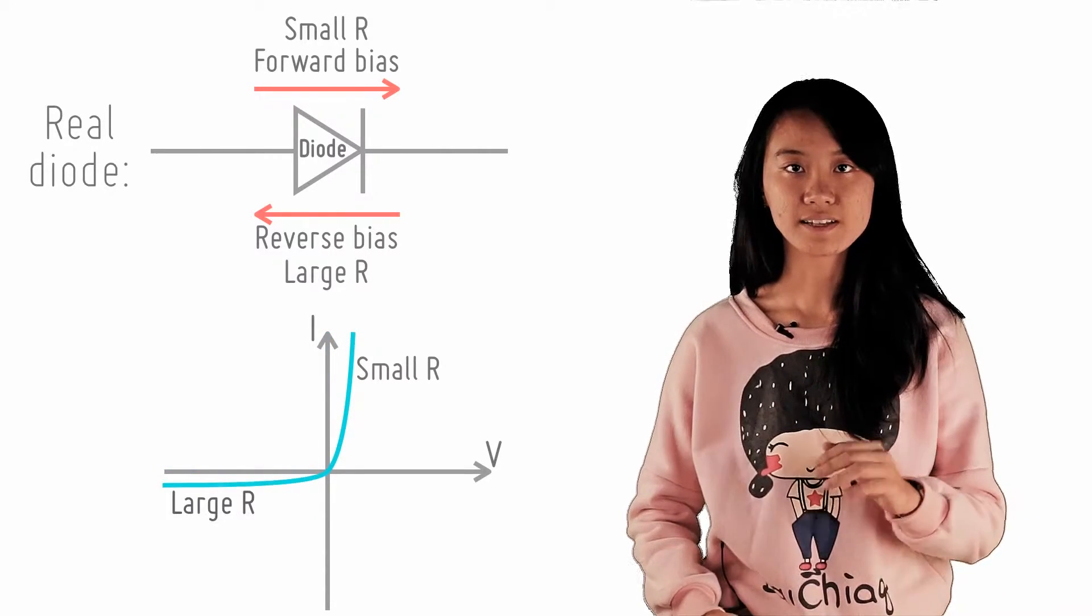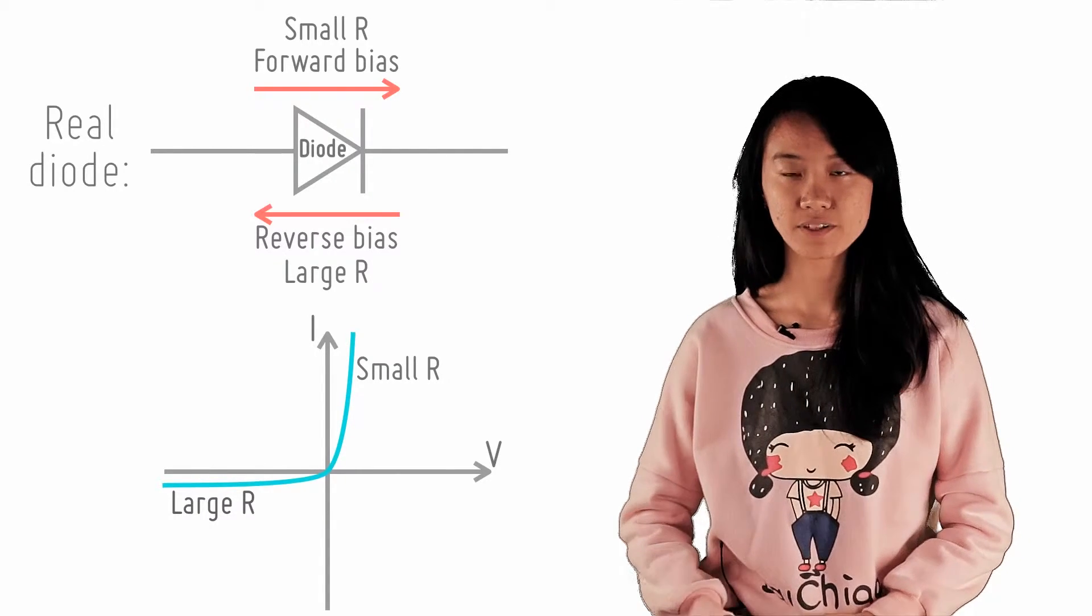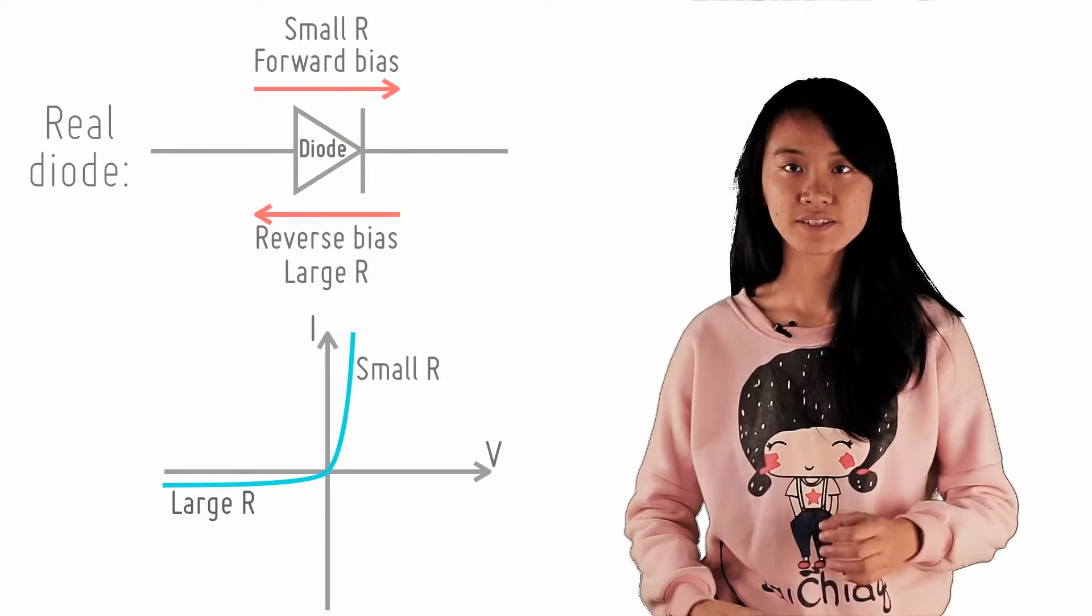In fact, it gradually increases. Similarly, the current does not go to zero in the reverse bias. Rather, it is just really small.